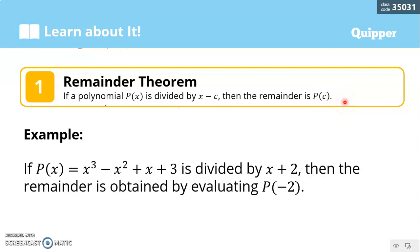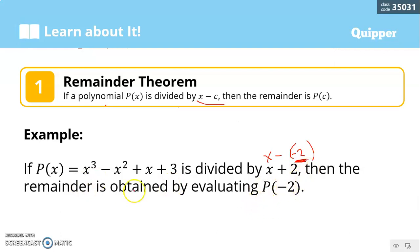Let's have an example. If P of X equals X cubed minus X squared plus X plus 3 is divided by X plus 2, then the remainder is found by evaluating P of negative 2. Our divisor is X plus 2, which in the form X minus C becomes X minus negative 2. So our C value is negative 2. Therefore we find the remainder by P of C, meaning we substitute negative 2 for all X values in the polynomial.